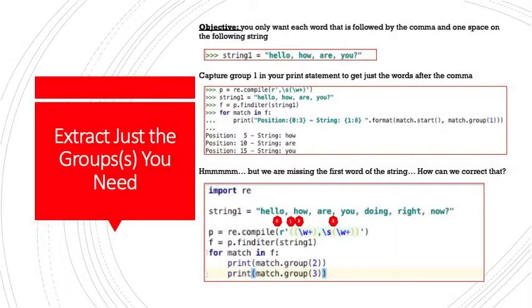Let's test out some use cases to see how much we know about using groups. Our objective here is we only want each word that is followed by a comma and one space on the following string, and we want to return just that word, not the space, not the comma, just the word. For this, we're going to use groups and the find iter method.